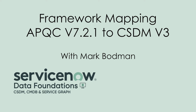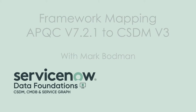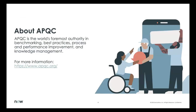In this session, we're going to be covering the mapping of APQC version 7.2.1 to CSDM version 3. APQC is really a benchmarking and process management organization. They define processes, collect metrics, and provide benchmarking information on how you rank against other companies in your industry or for certain process areas. For more information, go to apqc.org.